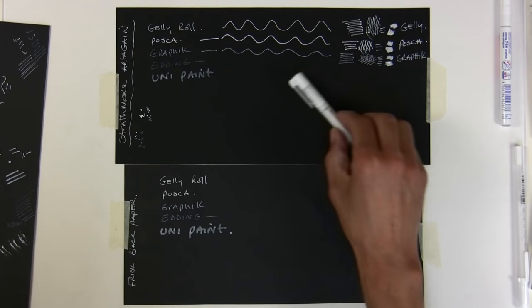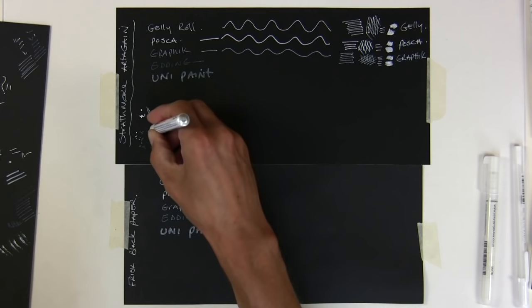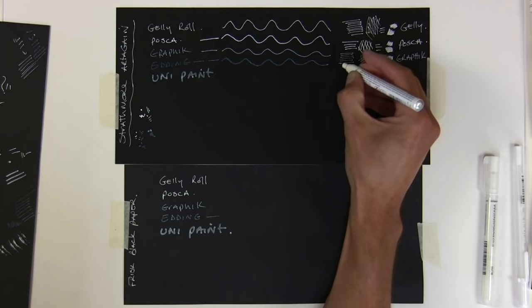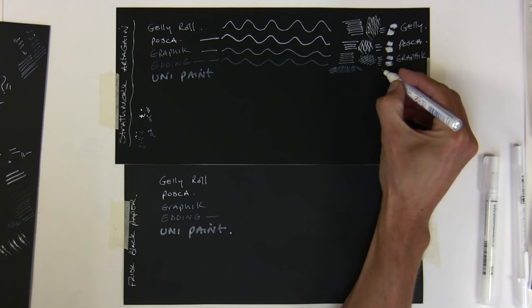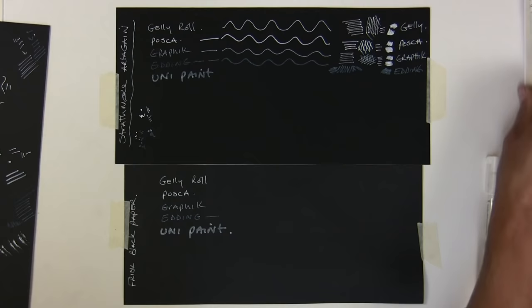But typically it's the white that I was most interested in. Okay, the edding one, really strange disappearing marker they should have called it, I think. Just make sure there's plenty of paint, ink, whatever you want to call it, coming out. Right, no more than that's going to come out, and there it goes, disappearing as I'm doing it again. Really strange.